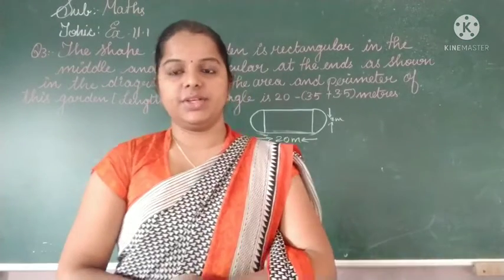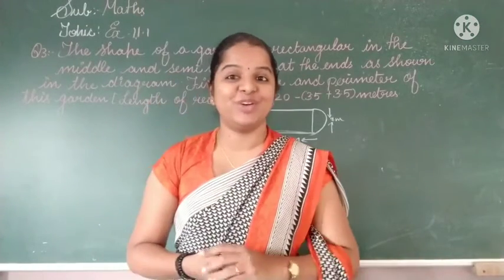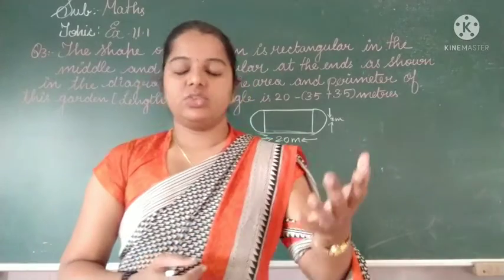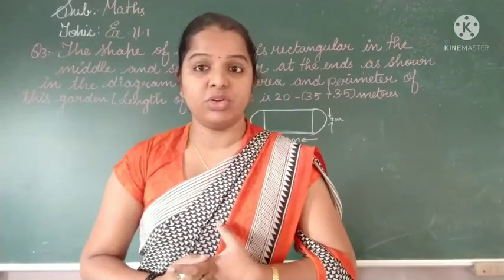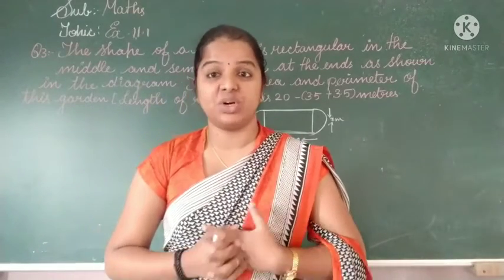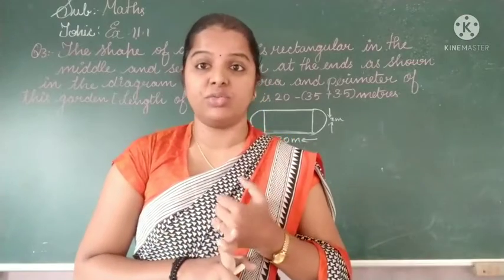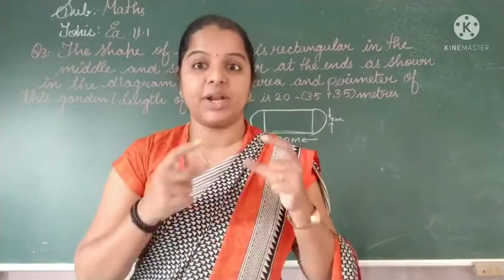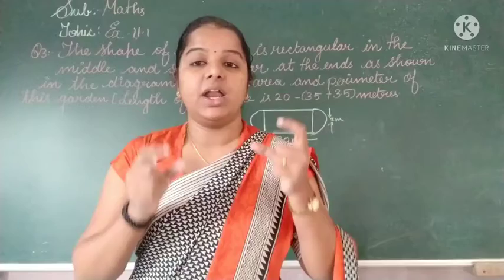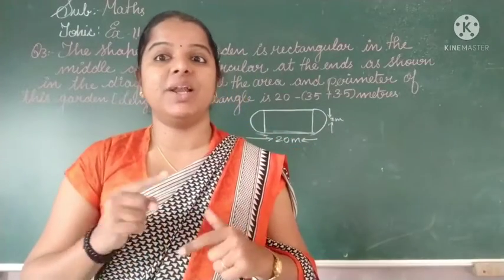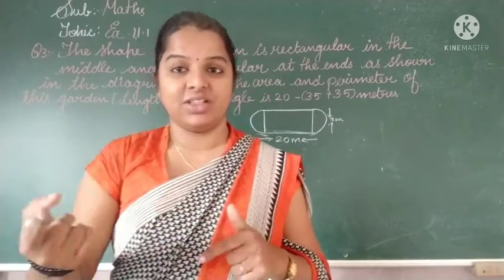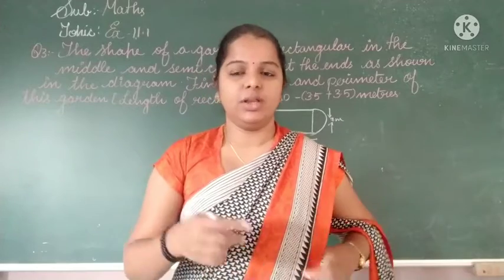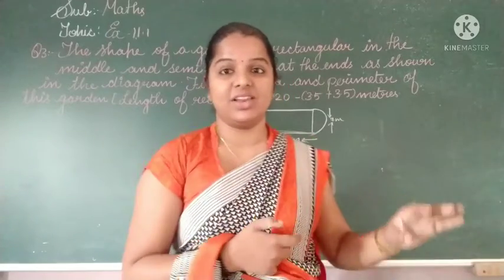Jai Swaminarayan students, hope you are all doing good. Today we are starting with question number 2. It is a warm-up for you in which you have to find the area of a square and area of a rectangle, subtract them, and multiply that area with the cost. That you will be doing on your own. Understood, students?